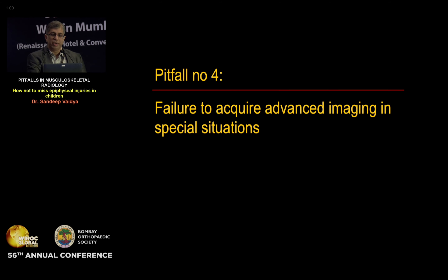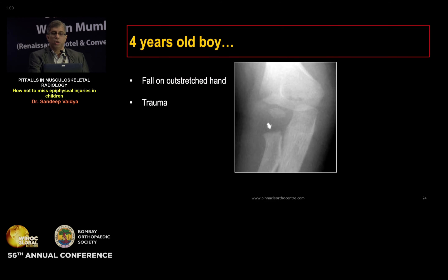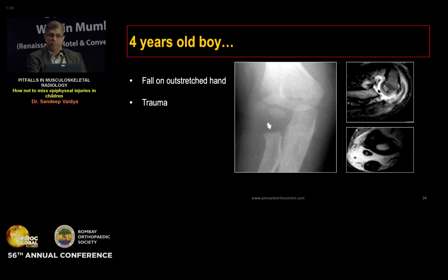The last pitfall is failure to acquire advanced imaging in special situations. Consider a four-year-old boy with fall on outstretched hand and elbow trauma. The X-ray looks perfectly normal, but the pain and swelling are out of proportion to the radiological findings. Advanced imaging reveals a completely displaced radial neck fracture not visible on plain X-rays because the radial head is completely unossified. Such situations — where the fracture may be through cartilage — are an indication for advanced imaging like MRI.